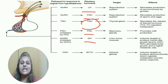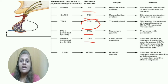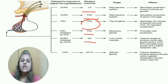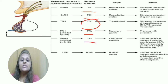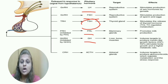ACTH, the adrenocorticotropic hormone, targets the adrenal gland, and the adrenal gland secretes hormones like glucocorticoids. These were all the hormones of the anterior pituitary gland.